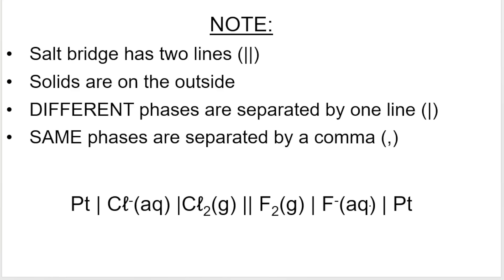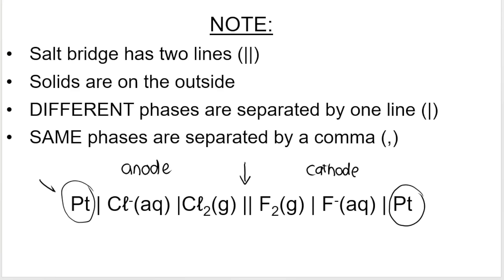In this particular example, you can see platinum on either end of the cell notation. There must always be a solid on the ends, and the reason both are platinum is because in these half cells we have gases. Since we have gases and aqueous solutions but our electrodes must be a solid, we choose an inert metal such as platinum — an unreactive metal — to be the solid electrode, forming a surface where oxidation and reduction reactions can happen.